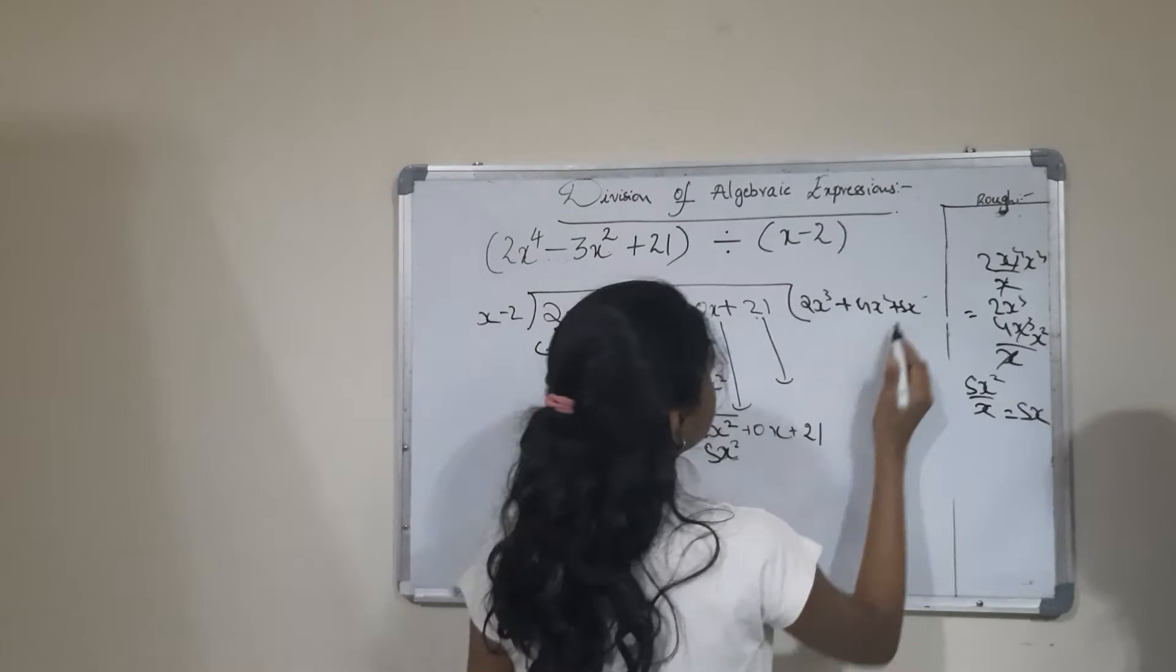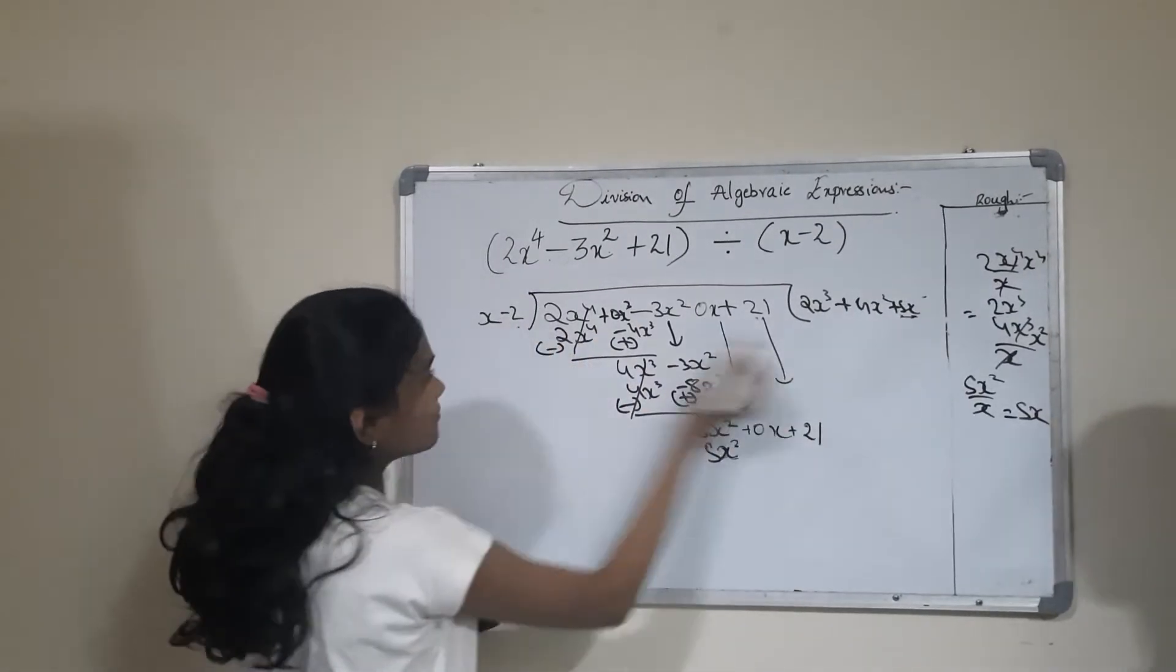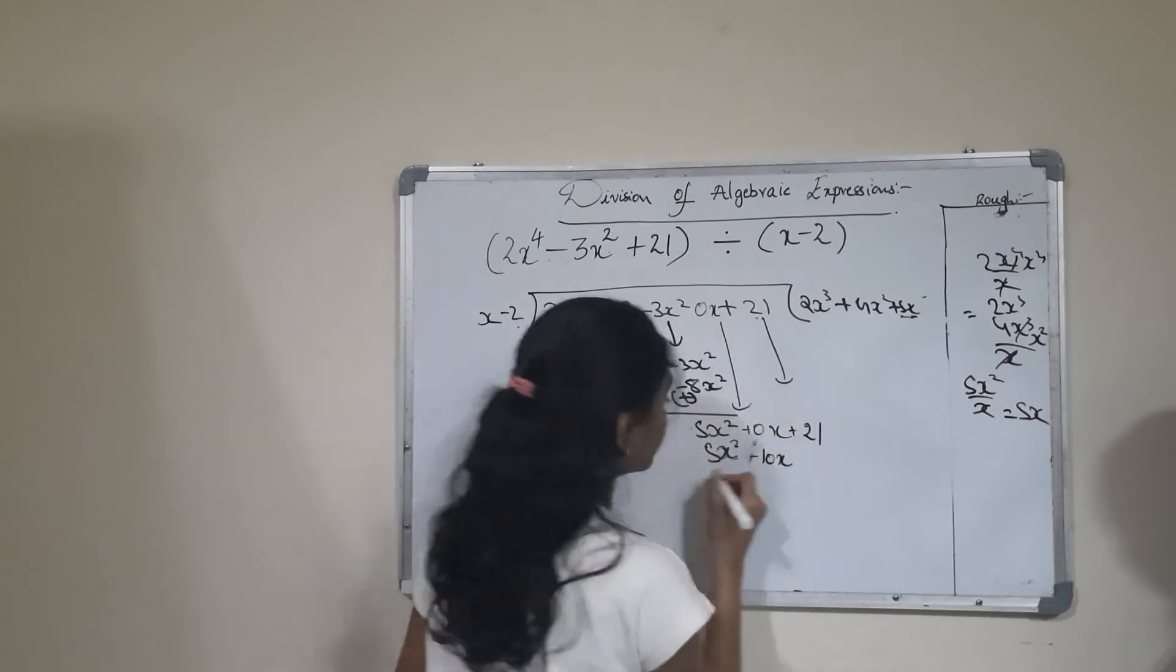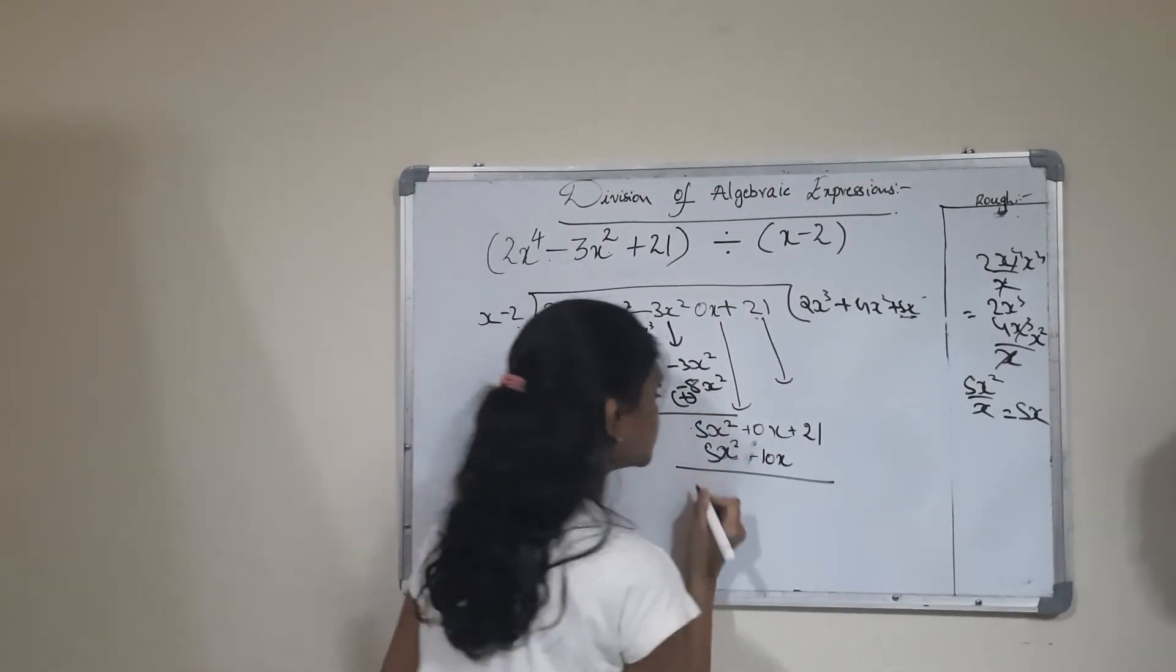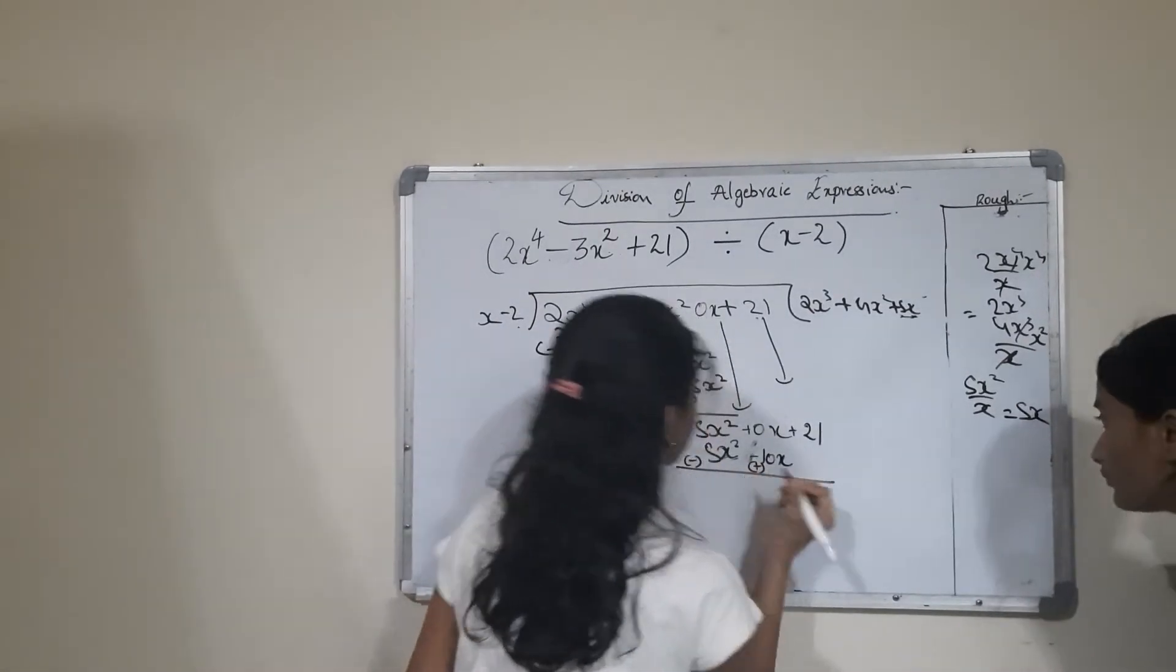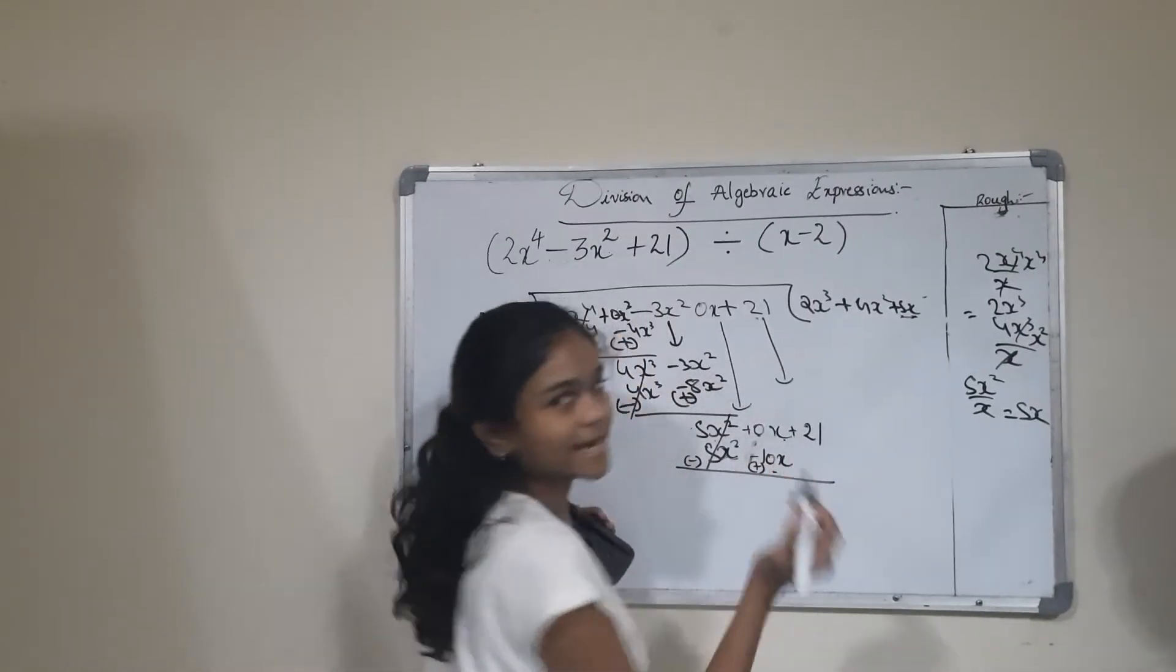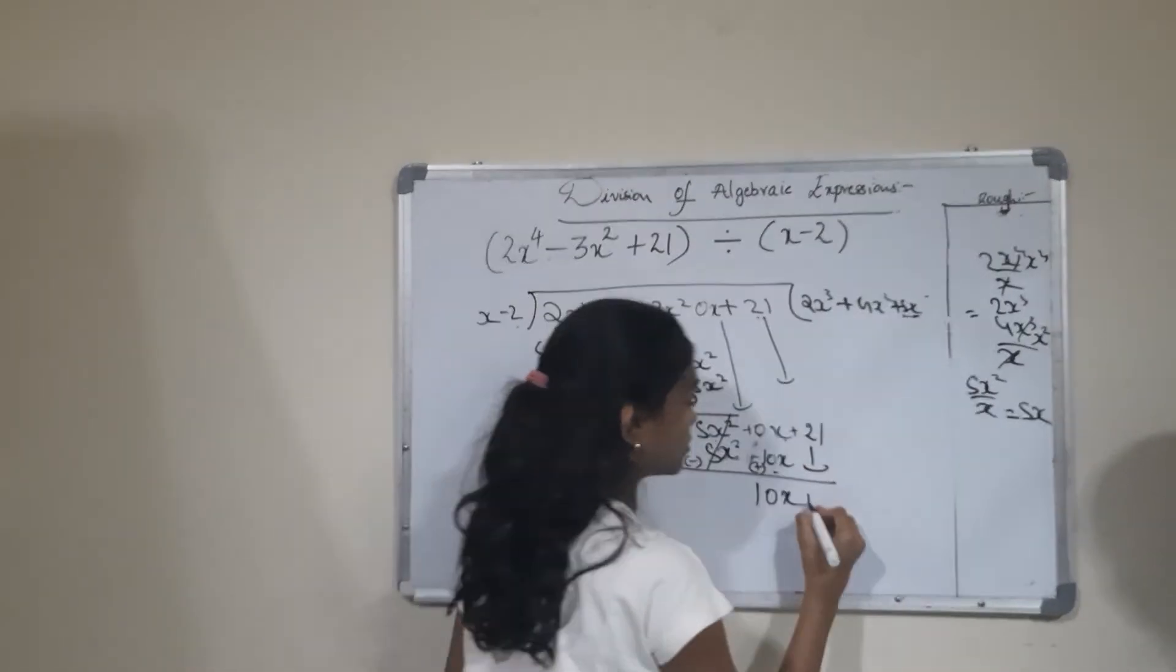We wrote 5x already, so multiply 5x by -2 to get -10x. Now subtract. The signs change: this becomes minus, this becomes plus. 5x^2 and -5x^2 cancel to 0. 0x plus 10x equals 10x. Bring down +21.